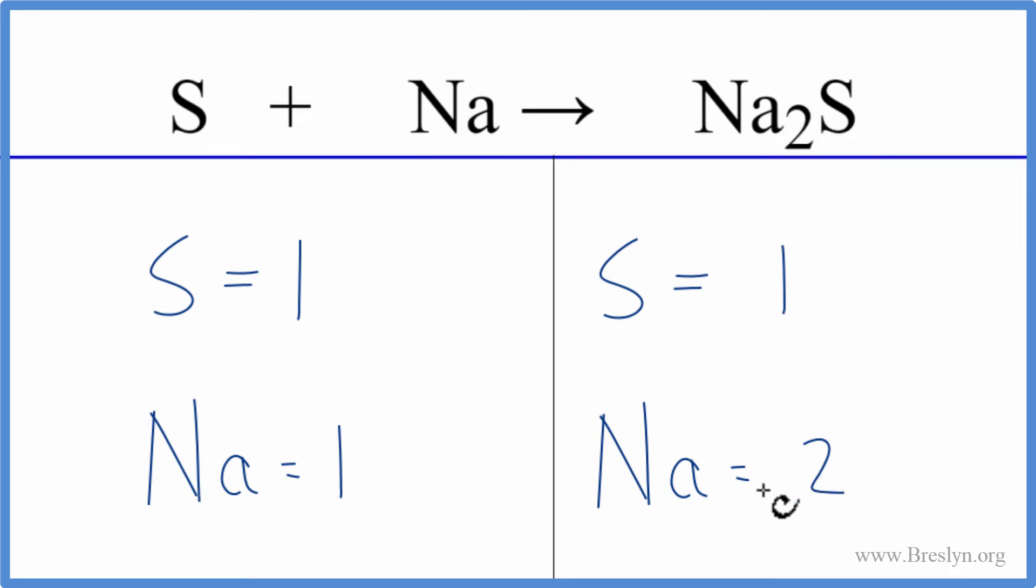Let's change the coefficient in front of the sodium and put it two. That means we have the one times two. So now we have two sodium atoms, and everything's the same on each side. This equation is balanced.